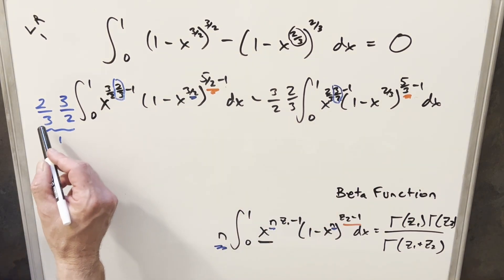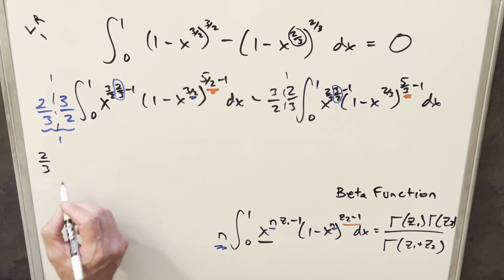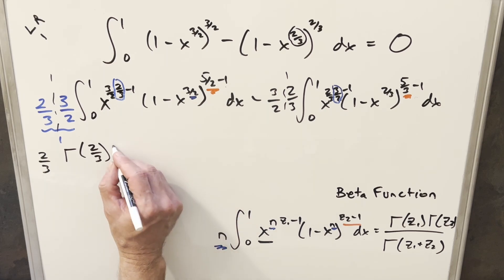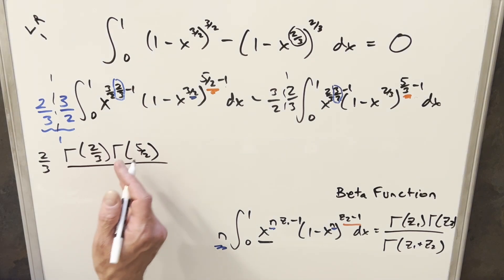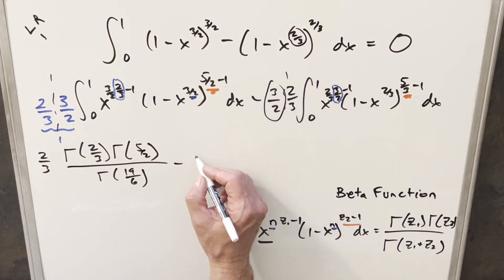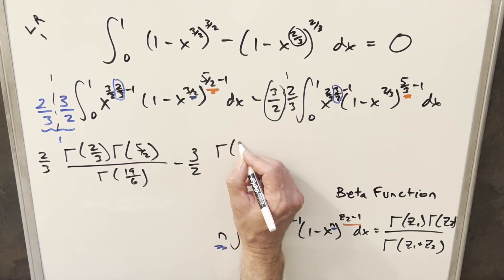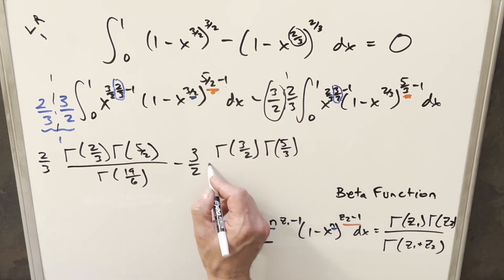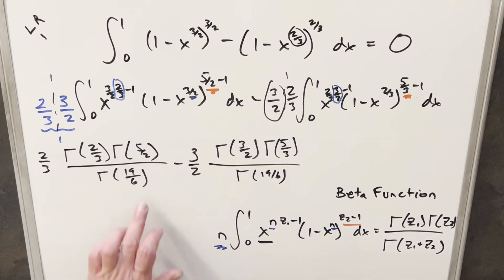Bringing the constants up front, for the first integral we have two-thirds out front, and going to the formula: gamma(z₁) is gamma(2/3), times gamma(5/2), over gamma of the sum of those two. Adding them with a common denominator gives gamma(19/6) in the denominator. For the second integral, we have three-halves out front, then gamma(3/2) times gamma(5/3), all over gamma(19/6) — which turns out to be the same denominator.